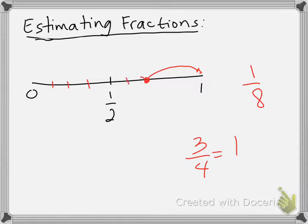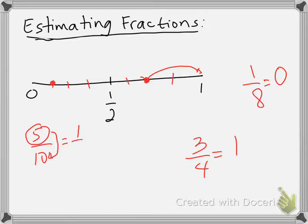If I have 1/8, I need to divide my number line into 8 equal parts. 1/8 is going to be around here, so that means 1/8 is going to be closer to 0, and I can estimate that fraction to 0. Now, 5/10 is very interesting because 5 is a half of 10, so that means this is 1/2 — just like 1 is a half of 2.